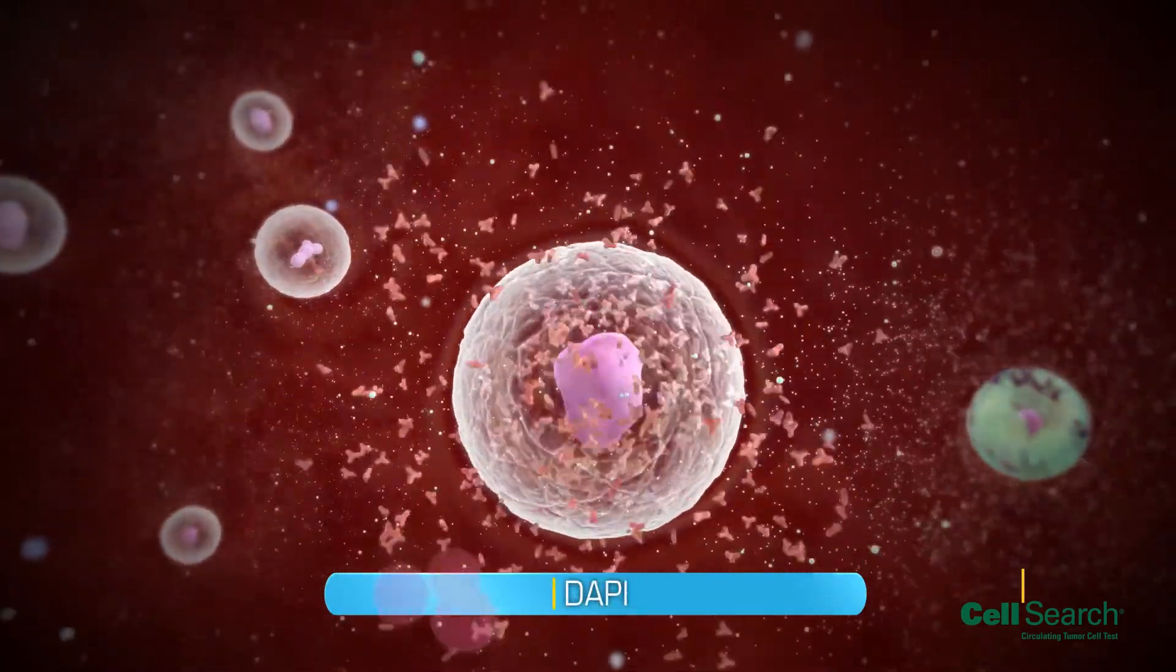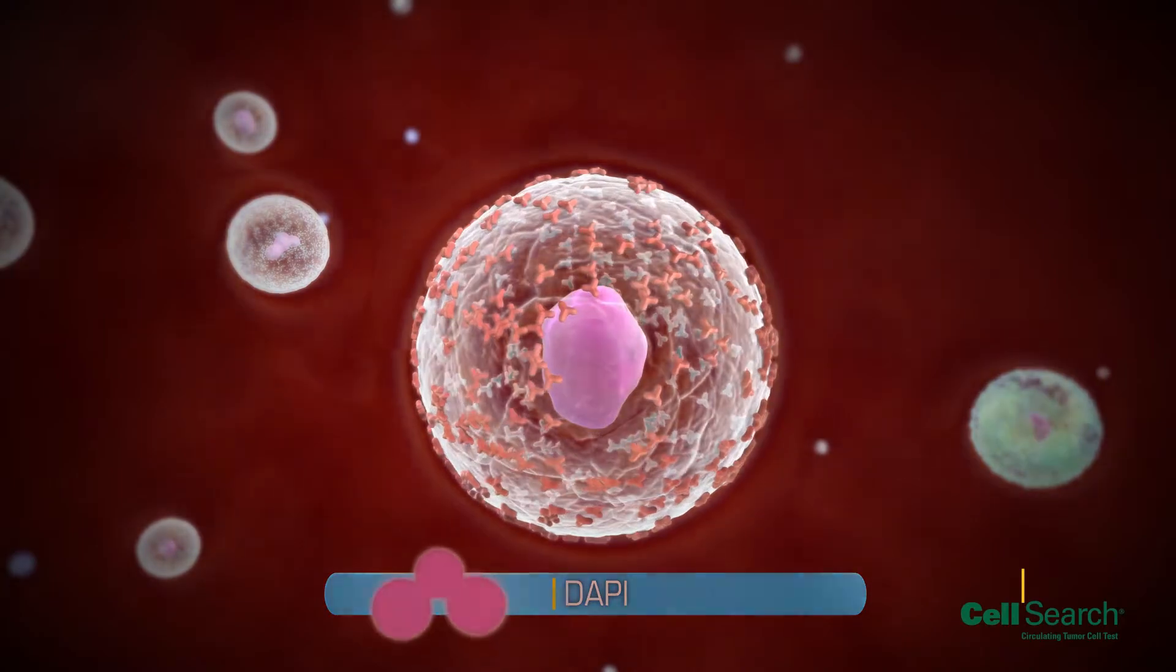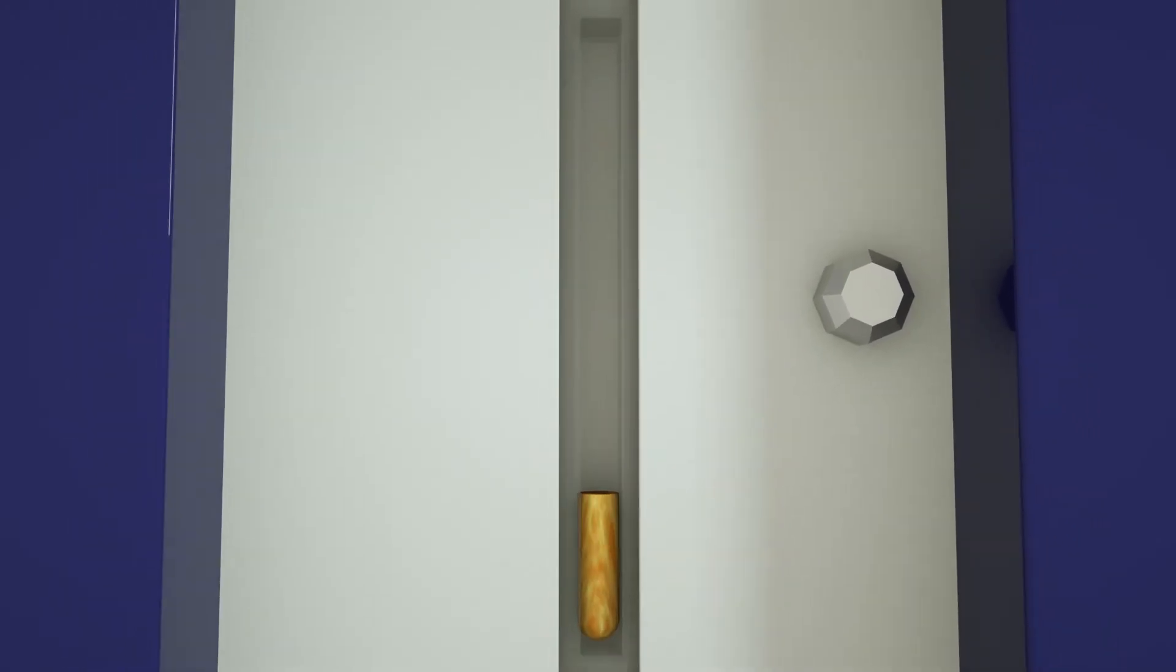These enriched and stained cells are then transferred to the CellTracks cartridge, which is contained within the CellTracks magnet for analysis.